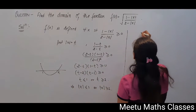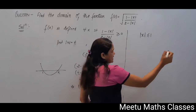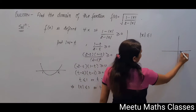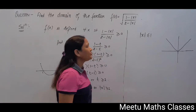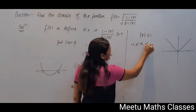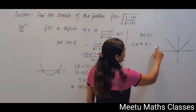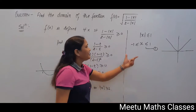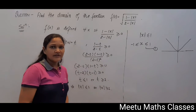Now consider |x| ≤ 1. The modulus function is less than or equal to 1 when x is lying between -1 and 1. So when |x| ≤ 1, x ∈ [-1, 1]. These are the set of points which come in the domain of your function.